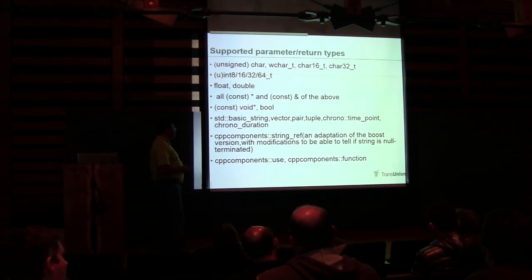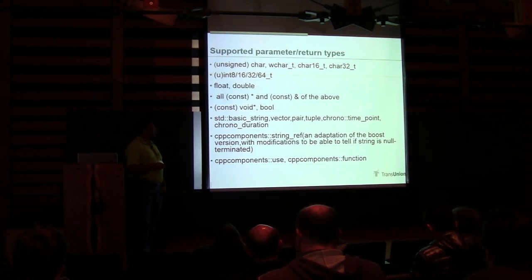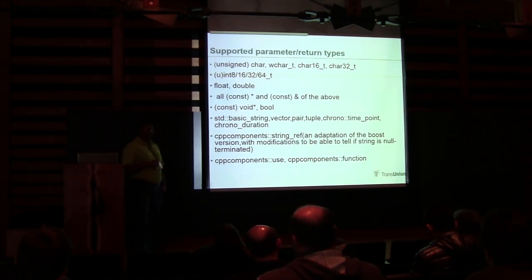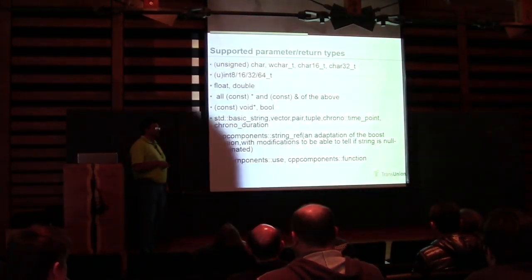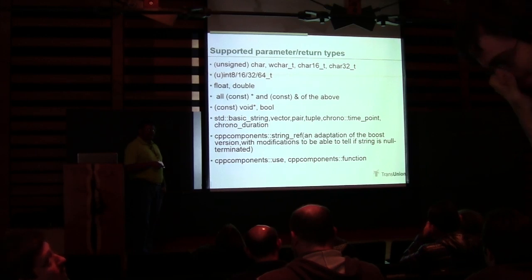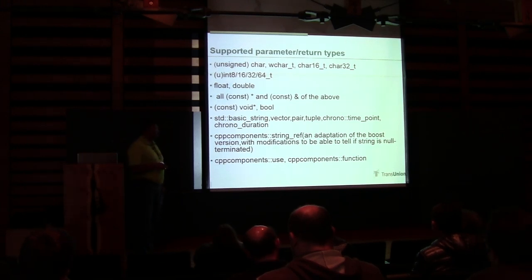One modification was to make sure it was a trivial class — something with the default copy constructors. I also added a modification to be able to tell if a string is null-terminated or not. With the current string_ref, if you have a string_ref you can't tell if there's a null at the end. It doesn't matter as long as you're processing the data, but the minute you want to create a wrapper for a C library — many of which expect a null-terminated string — this allows you to tell if it's null-terminated and act accordingly.